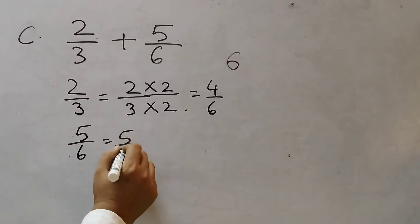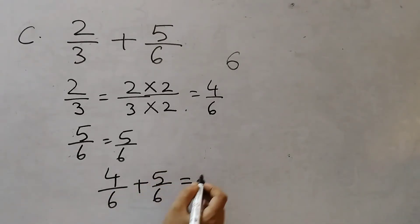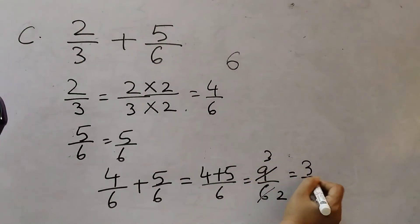And 5 by 6 will remain as 5 by 6. Because the denominator is 6. So it will remain as 5 by 6. Now add these two. 4 by 6 plus 5 by 6 equals 4 plus 5 is 9 by 6. 9 by 6 we can cancel. 3 2's are 6. 3 3's are 9. So that is 3 by 2.